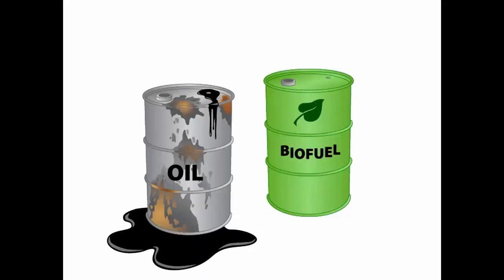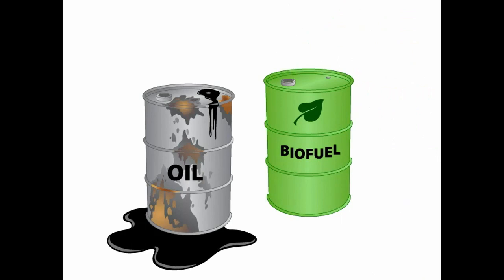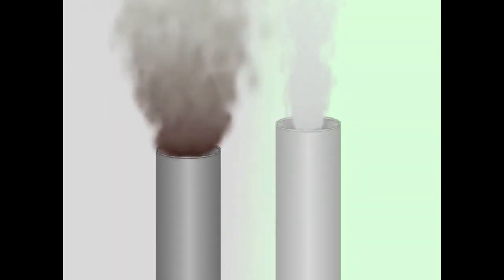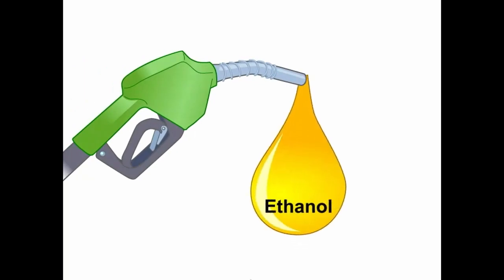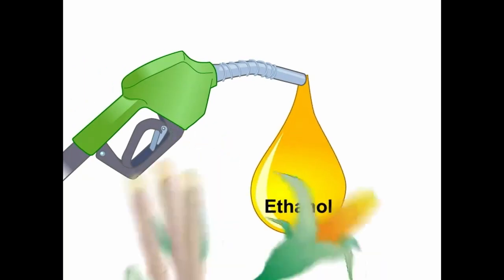Cellulosic ethanol is a biofuel produced from grasses, wood, algae, or other plants. As a biofuel, it serves as an alternative to fossil fuels and burns cleanly, reducing its environmental impact.